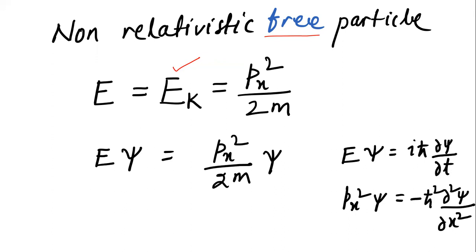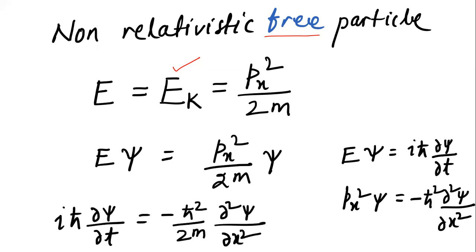Substituting these values, we obtain the one-dimensional time-dependent Schrödinger equation for a free particle moving in the x direction. Since there is no potential energy for a free particle, the equation is: iℏ · ∂ψ/∂t = −ℏ²/2m · ∂²ψ/∂x².